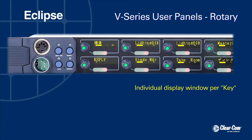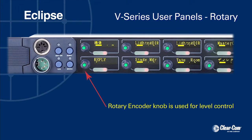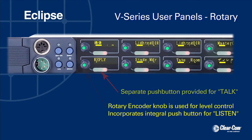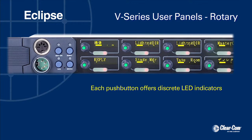Each rotary panel key features an individual display window along with two separate controls. The rotary encoder knob is used for level control and incorporates an integral push-button function for listen, while a separate push-button is provided for talk. Each push-button offers discrete LED tally indication, with red for talk and green for listen.